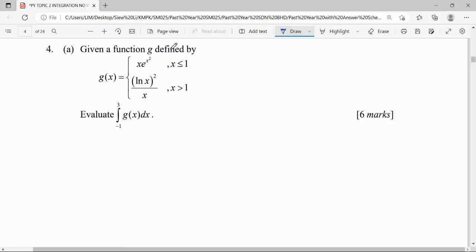Given a piecewise function g, defined by: for x less than 1, it will be x to the power of x squared; for x more than 1, ln x squared over x.